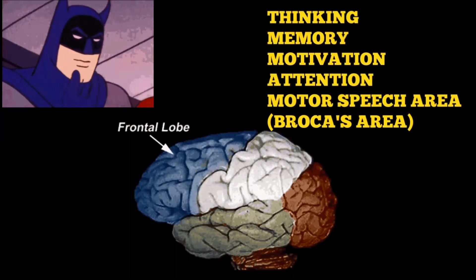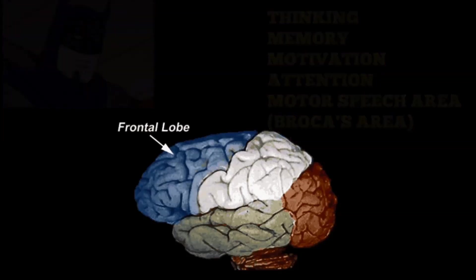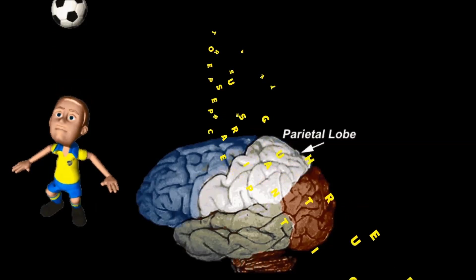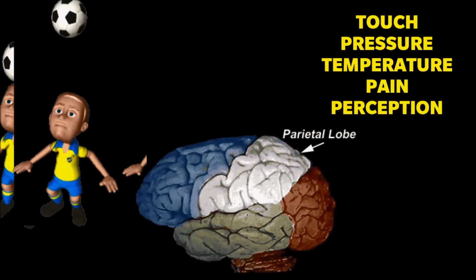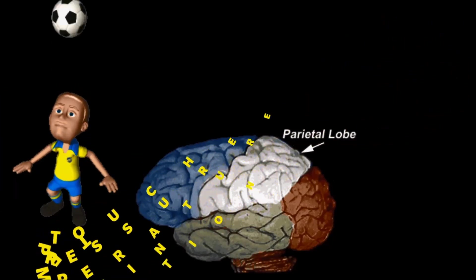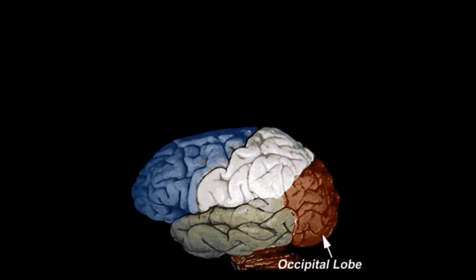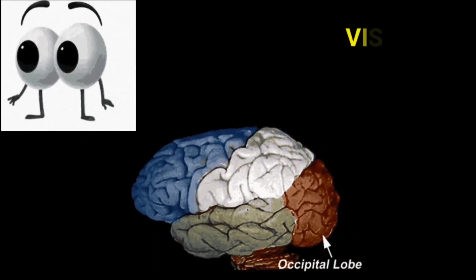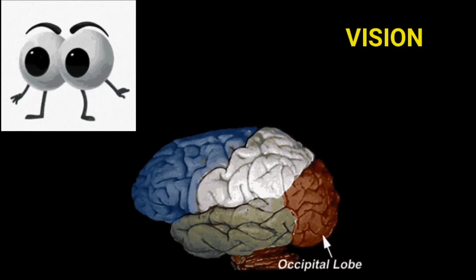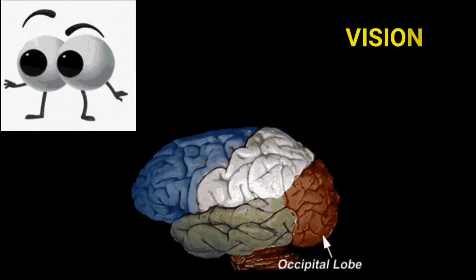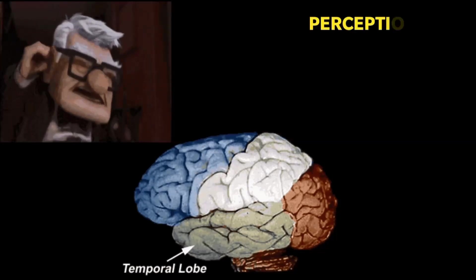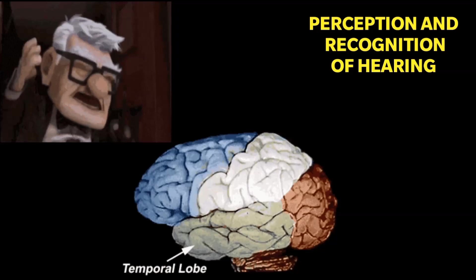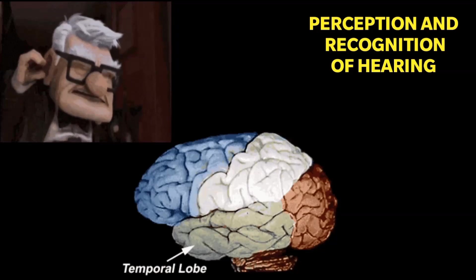The frontal lobe is for thinking, memory, motivation, and attention — it contains the motor speech area (Broca's area). The parietal lobe is responsible for motor actions, touch, temperature, and pressure. The occipital lobe is for vision. The temporal lobe is responsible mainly for perception and recognition of hearing.